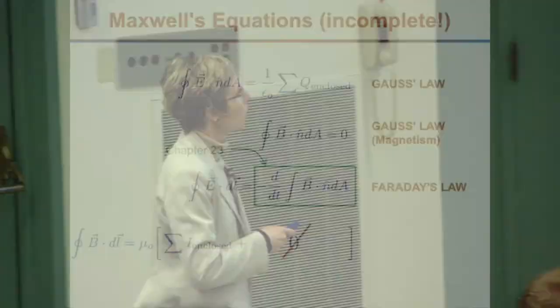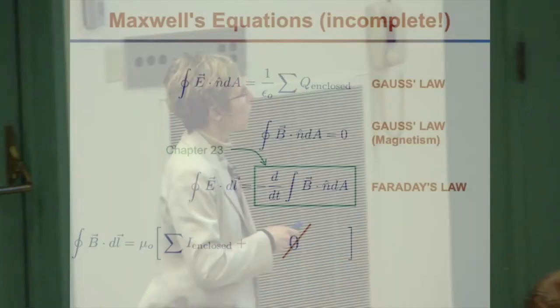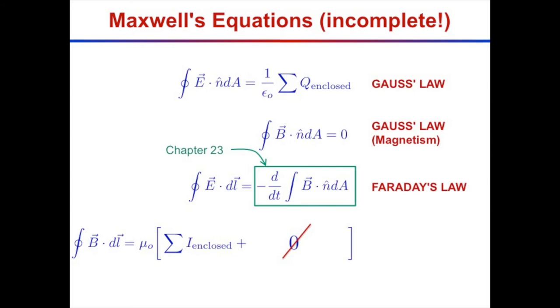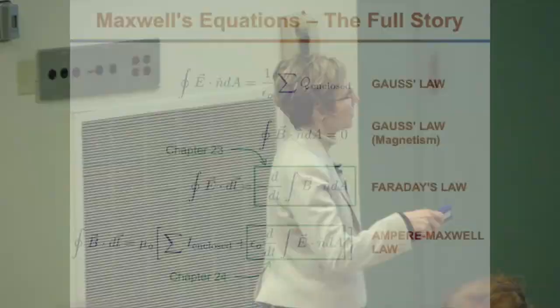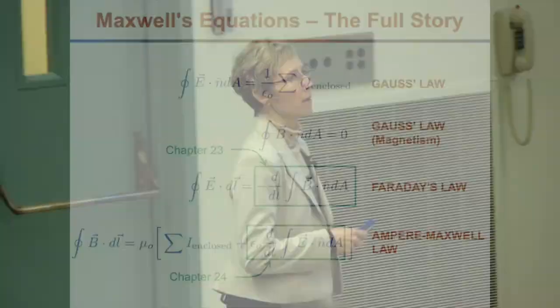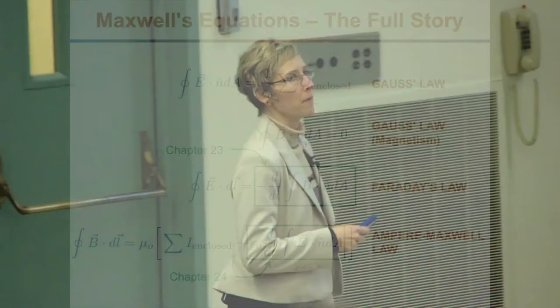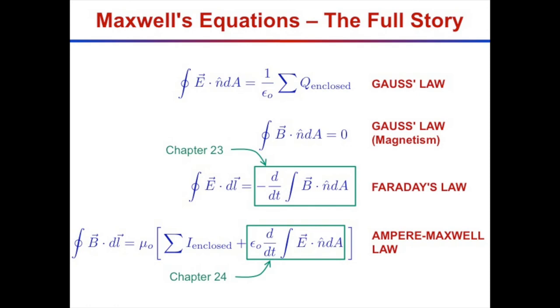If things change in time, some equations get updated. In the next chapters, we'll handle the non-steady state situation. One update: the line integral of the electric field around a closed path gets a new term if there's a changing magnetic field - for example, by waving a magnet near your experiment. That's Chapter 23. In Chapter 24, we add a term to Ampere's Law for a changing electric field. Once we have all that together, we have the full story - Maxwell's equations.